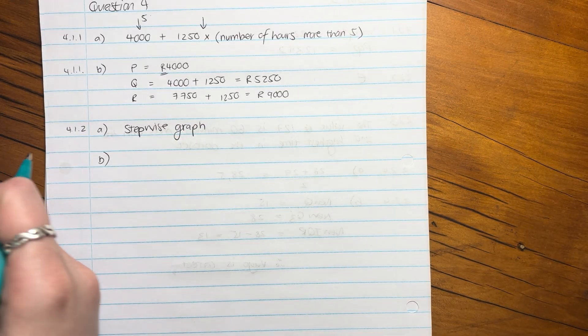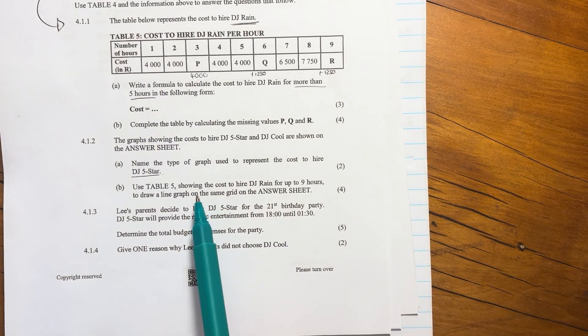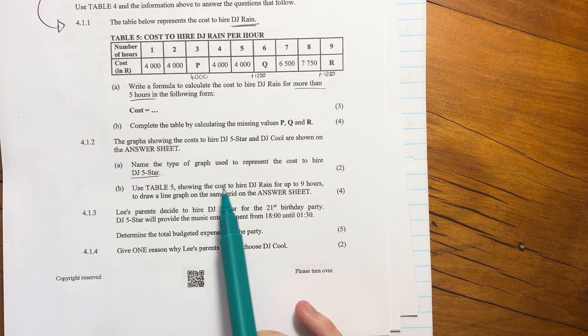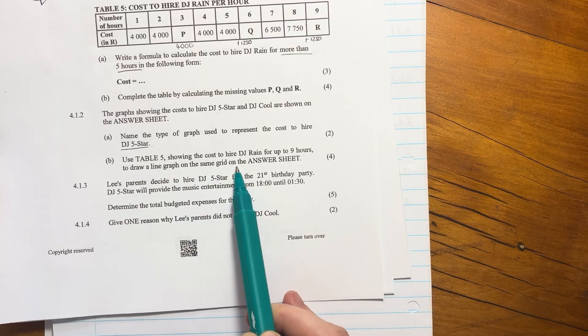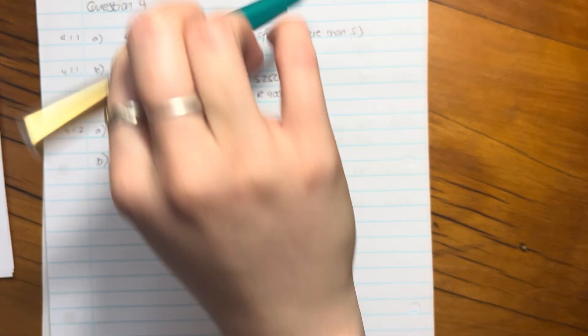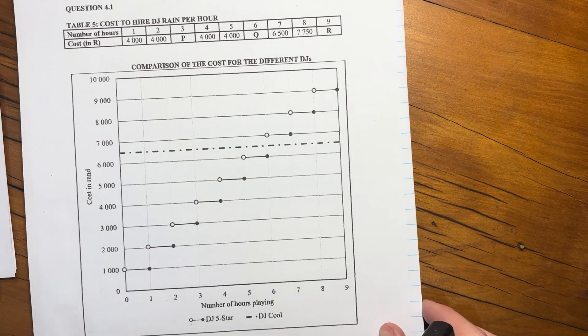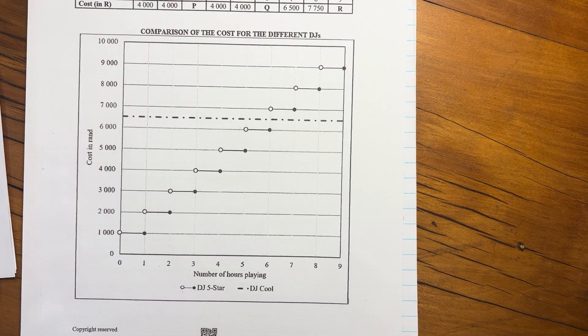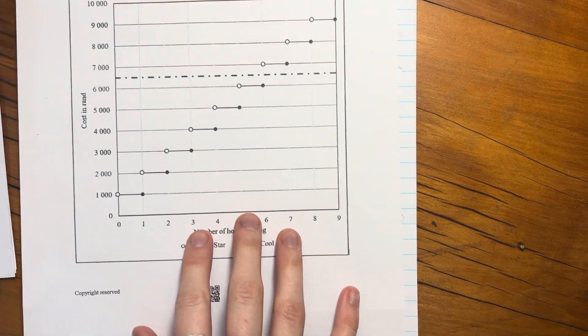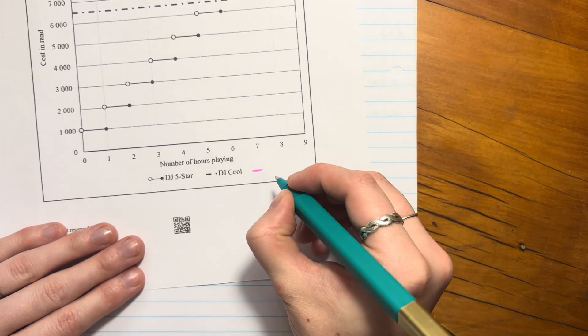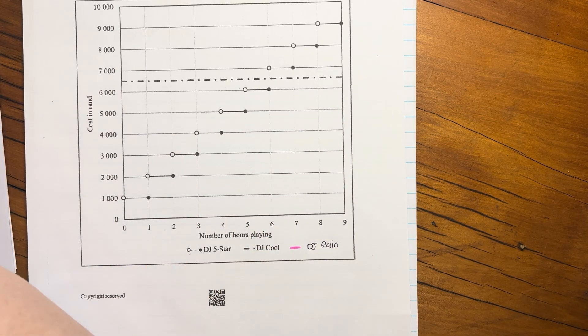The next question says use table five showing the cost of hire for DJ Rain for up to nine hours to draw a line graph on the same grid on the answer sheet. So what we're definitely going to have to do is put a little grid. It's probably best to do it in pencil first because sometimes you can do it wrong. We know that in exams sometimes we can do things incorrectly, so just be careful there. DJ Rain.